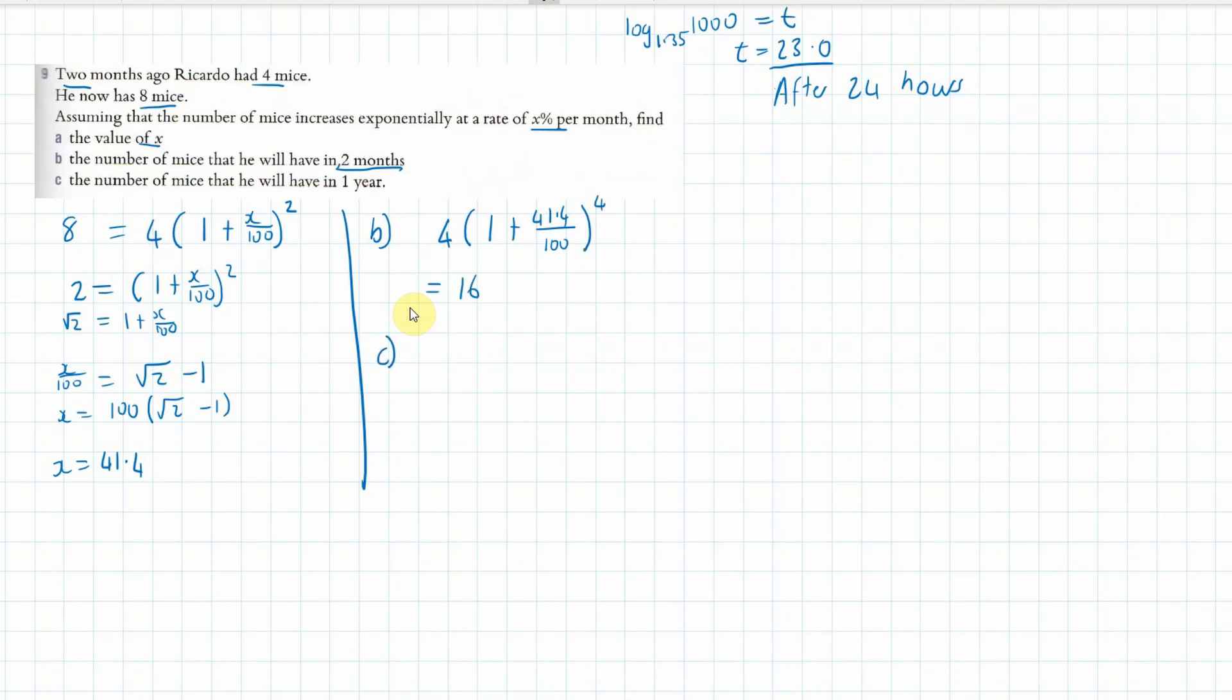And after one year, now is that one year from the point from the beginning or one year from the point that he's got eight mice? I'm not sure. Why don't we just try one year from now which means that we've got to add on two months. So that should be 14 months. So let's try that and see what we get. 512 mice I think.